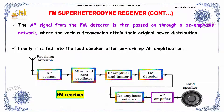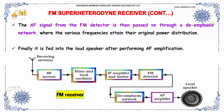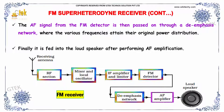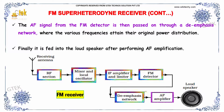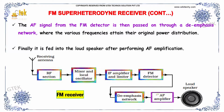The AF signal from the FM detector is passed through a de-emphasis network, where the various frequencies attain their original power distribution. Finally, it is fed into the loudspeaker after passing through an AF amplifier.